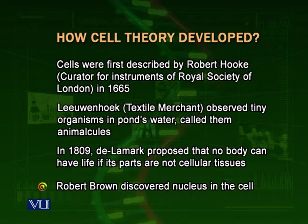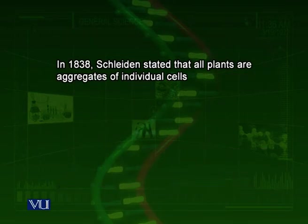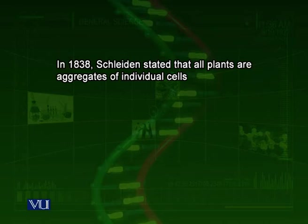Robert Brown identified the nucleus inside the cell. He stated that cells have a central part that is more dense in comparison to the other parts of cells. In 1838, a botanist named Schleiden stated the first part of the cell theory — that all multicellular plants are aggregates of cells.